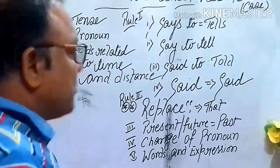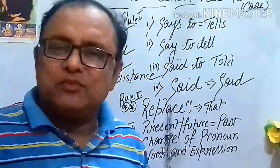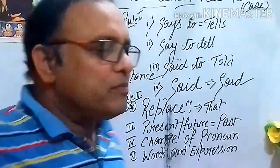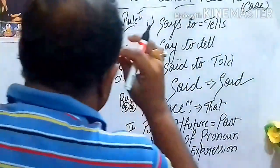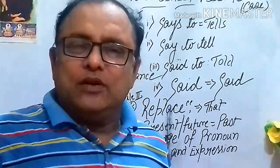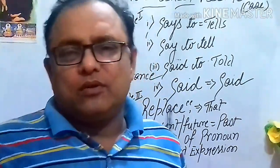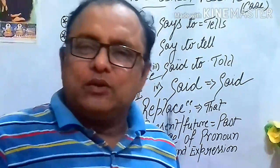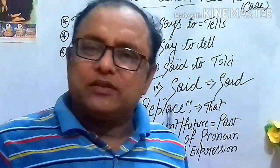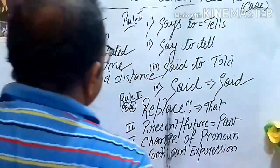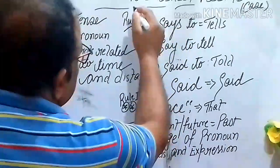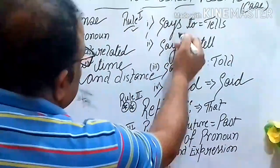Those students who have not watched my narration Part 1 and narration Part 2 videos can refer to my channel Bidhan English Classes — the video links are in my description box. Now I will focus on certain specific rules that we must utilize while changing an assertive sentence into indirect speech. The first rule is: the reporting verb changes as follows.